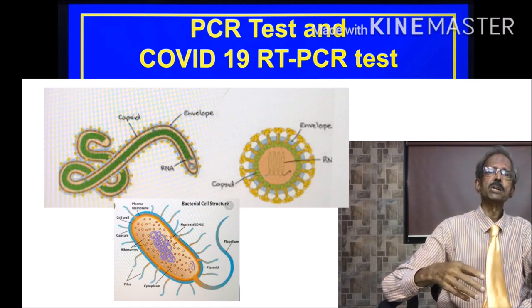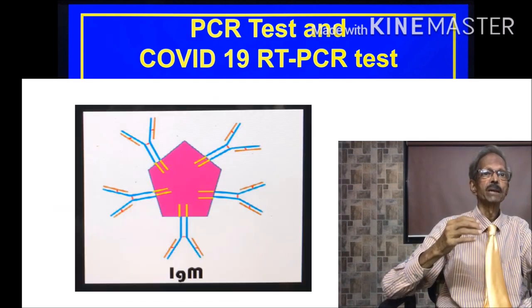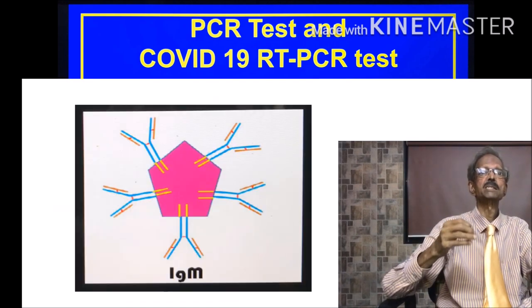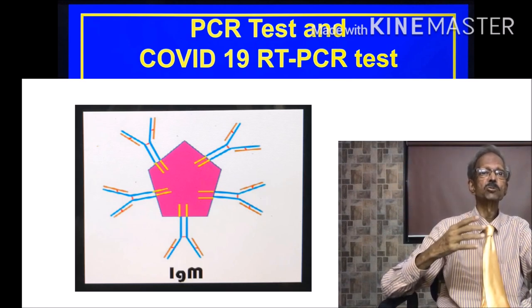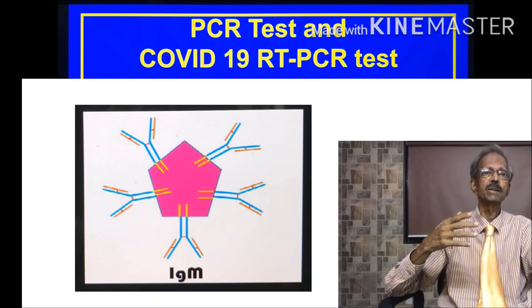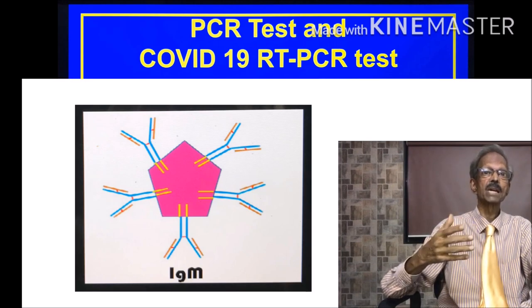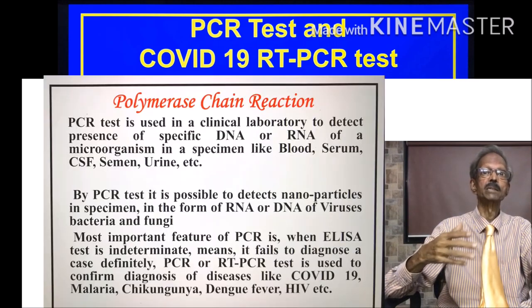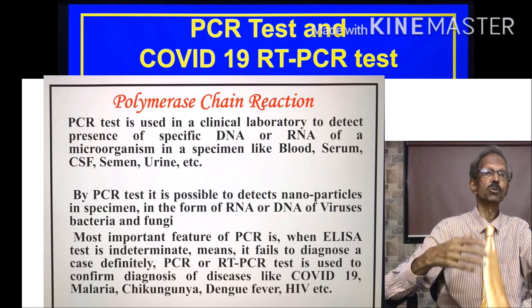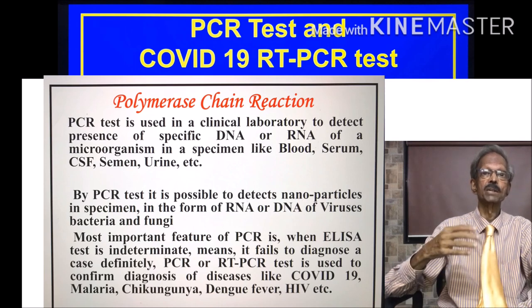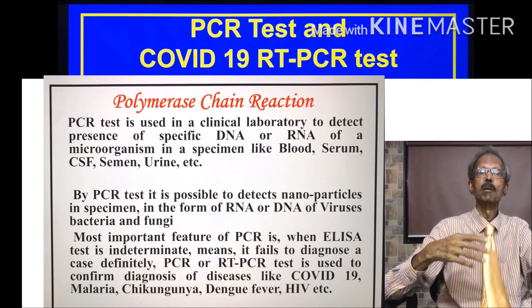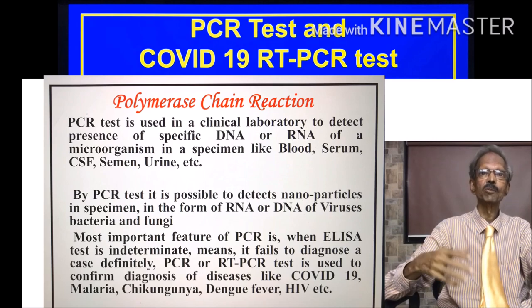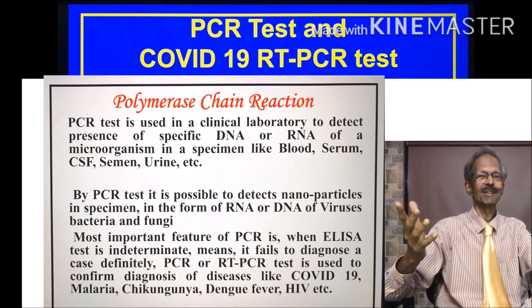A most important feature of PCR is when the ELISA test is indeterminate — meaning it fails to diagnose a specific case definitively — PCR or RT-PCR test is used to confirm diagnosis of diseases like COVID-19, malaria, chikungunya, dengue fever, HIV, etc.